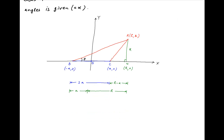Let's assume that the base angles of triangle ABC are theta and phi respectively. Therefore, angle ACN is equal to π minus phi.